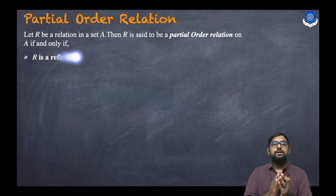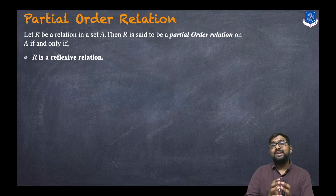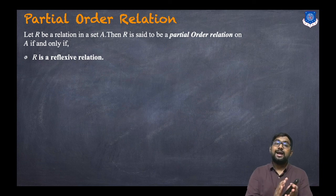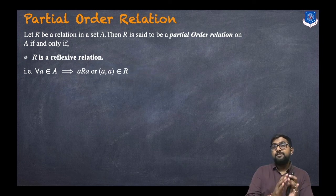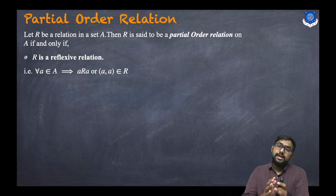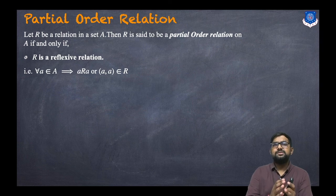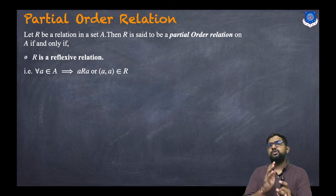Let capital R be a relation in a set A. Then R is said to be a partial order relation on A if and only if: first, R has to be a reflexive relation. For reflexivity, for every A belonging to A, A is related to itself — that means the ordered pair (A, A) belongs to R.